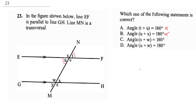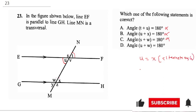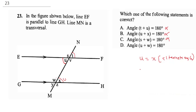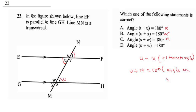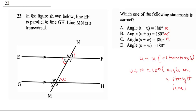Angle S plus W equals 180 — angle S is corresponding to angle W, so they are equal, not supplementary, so this is wrong. Then it says angle U plus W equals 180. Looking at U plus W: angle U is the same as angle X by alternate angles. Now U plus W are angles on a straight line, so U plus W equals 180, because angles on a straight line equal 180. Therefore D is the correct answer.